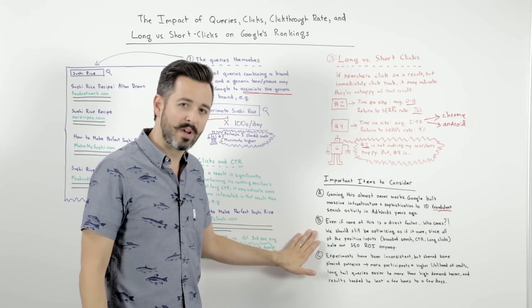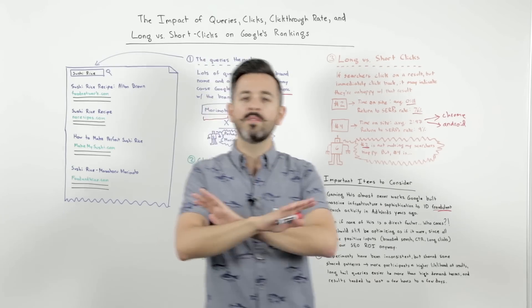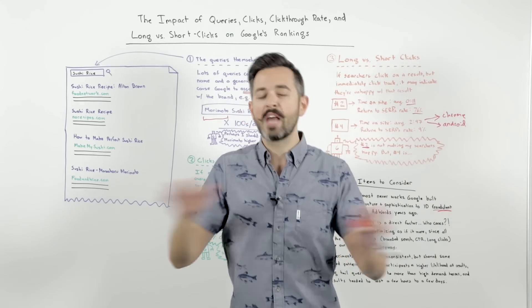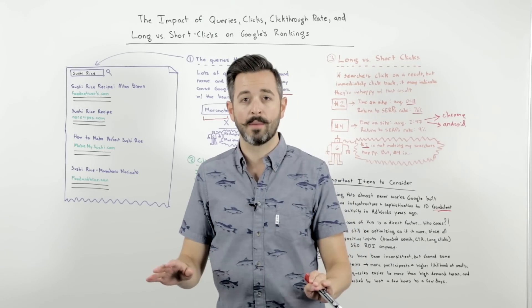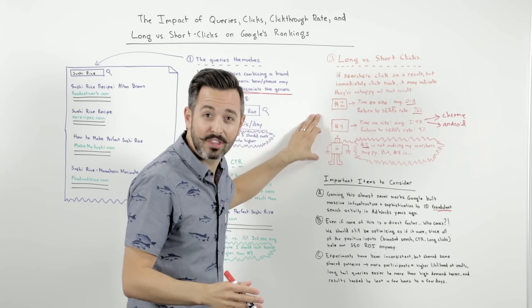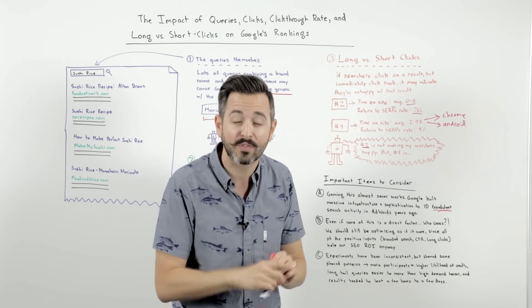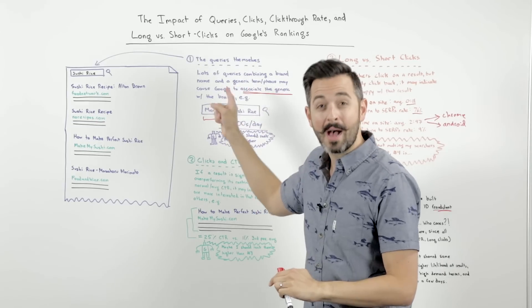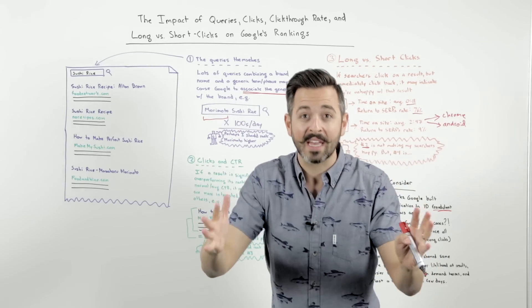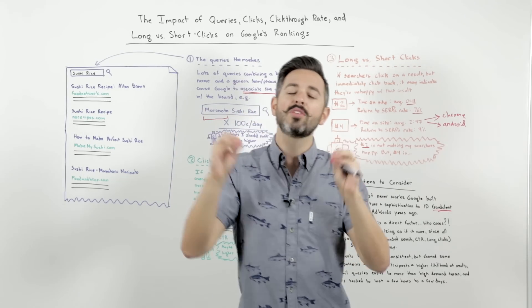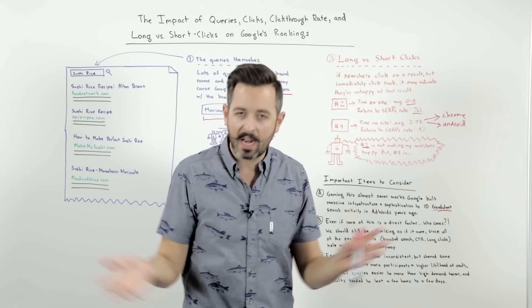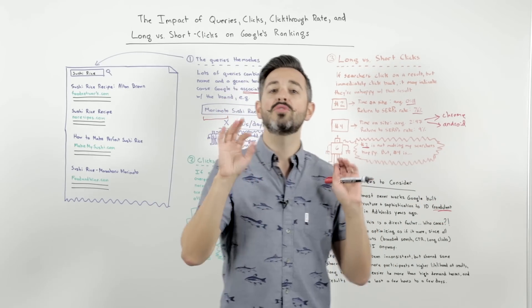Even if none of this is a ranking factor — even if you say none of the experiments are convincing and you find holes in all of them — so what? Is there any reason you wouldn't optimize for a higher click-through rate? Is there any reason you wouldn't optimize for longer clicks versus shorter clicks? Is there any reason you wouldn't try to get more branded search traffic with people associating your brand with the generic term? No way. You're going to do this anyway. It's one of those wonderful benefits of doing holistic, broad-thinking SEO and organic marketing in general — it helps you whether or not you believe these are ranking signals.